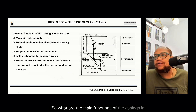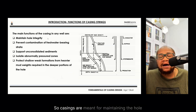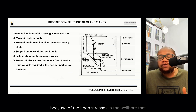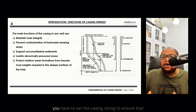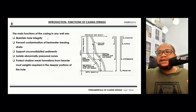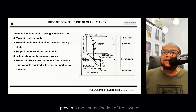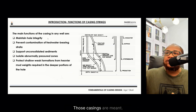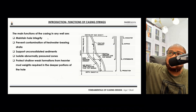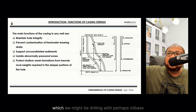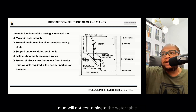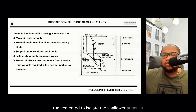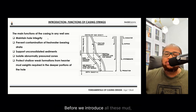What are the main functions of casings in the wellbore? Casings are meant for maintaining wellbore integrity — once you drill a wellbore, hoop stresses will want to make it collapse inward, so you set the casing string to structurally isolate it. Casing also prevents contamination of freshwater-bearing sands — that's the role of the top casing strings, your conductor casing and surface casing. Those casings isolate the top sections of the wellbore so that drilling with oil-base mud does not contaminate the water table.